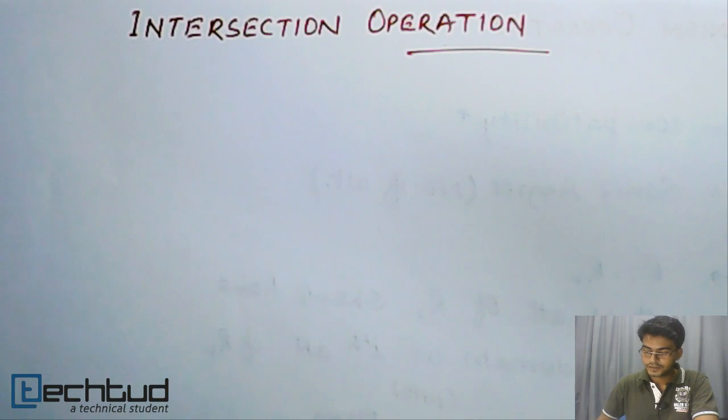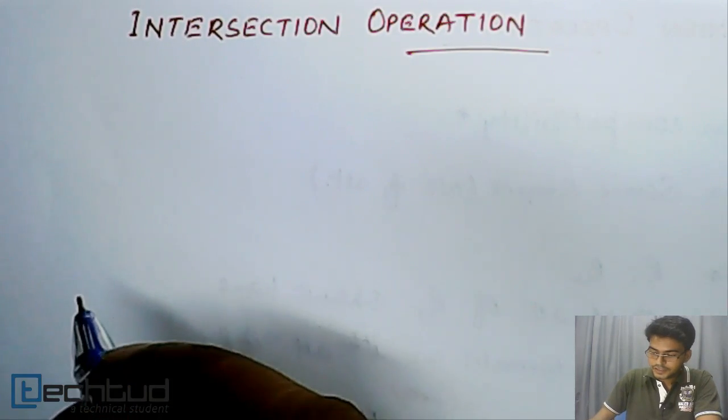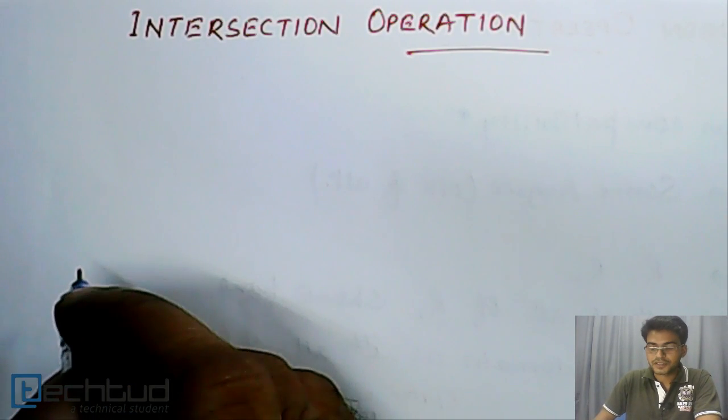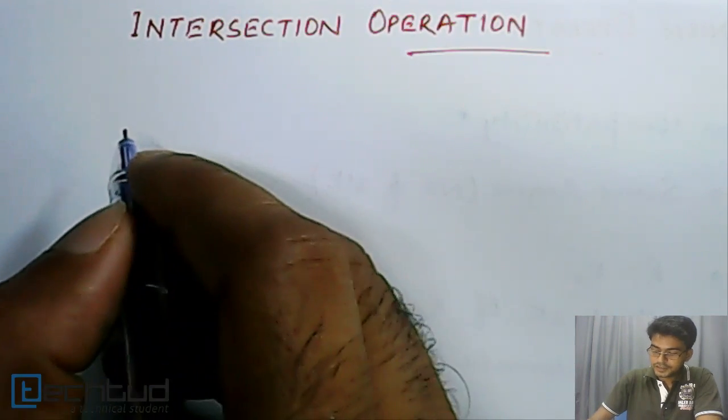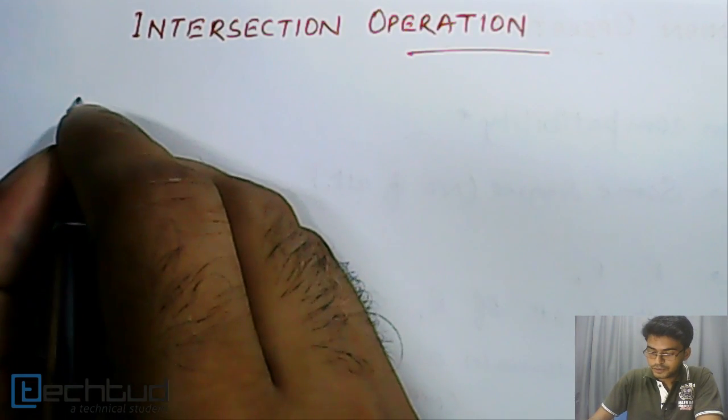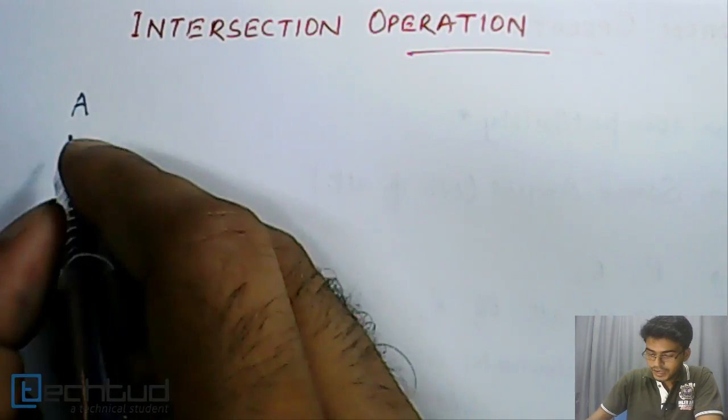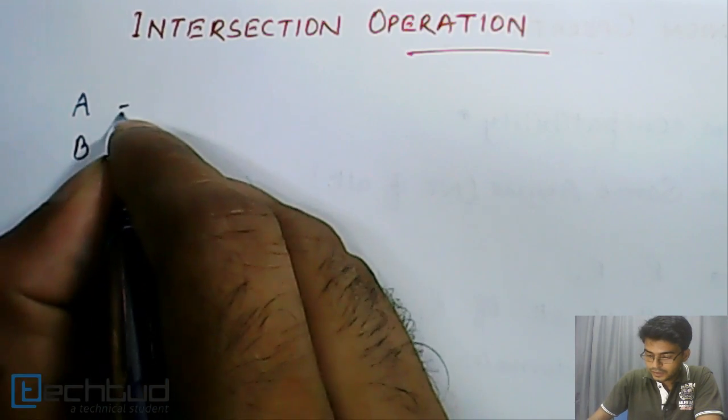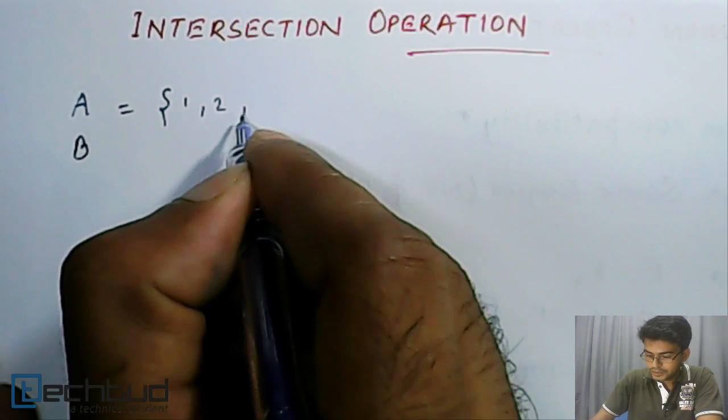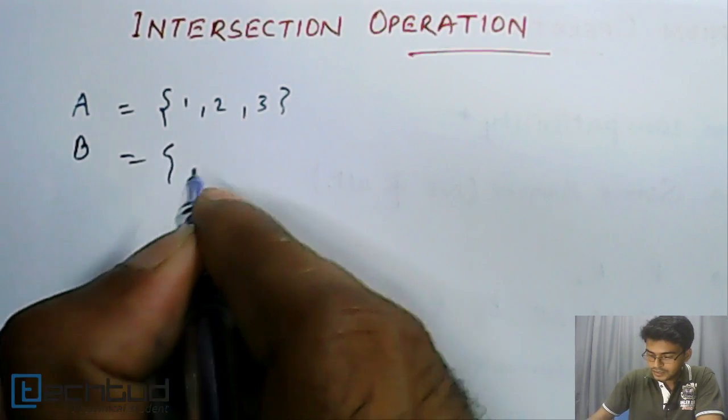Hello everyone, welcome back. Now let's start with intersection operation, a very simple operation. What we do here in intersection is, let's say we have two sets A and B. A is let's say 1, 2, and 3, and B is let's say...